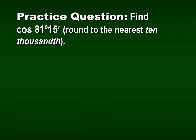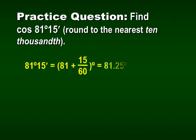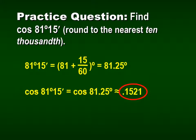Let's find cosine of 81 degrees, 15 minutes. Again, this is not a special angle, so we plug it into our graphing calculator. First, we convert: 81 plus 15 over 60 equals 81.25. So 81 degrees 15 minutes is the same as 81.25 degrees. In our calculator, cosine of 81.25 in degree mode gives us 0.1521.